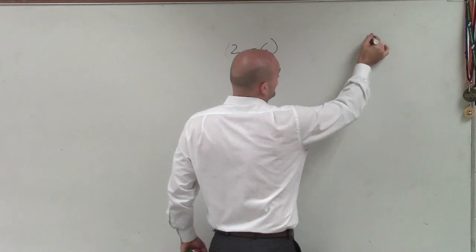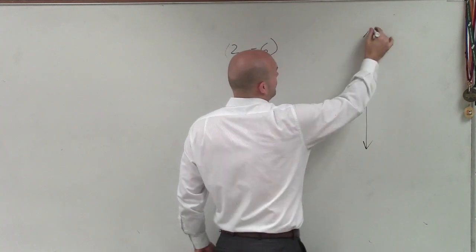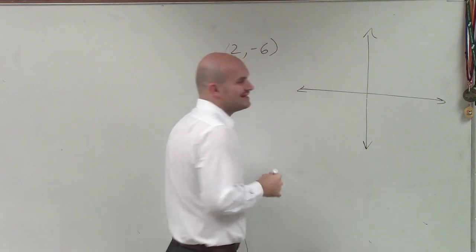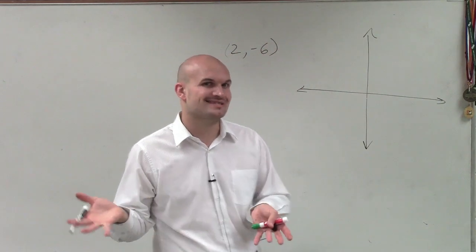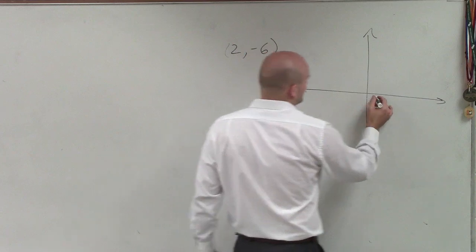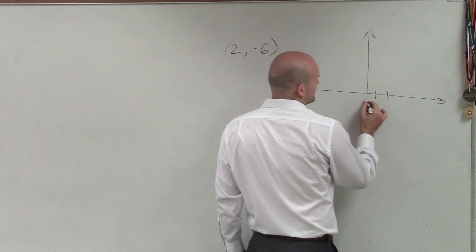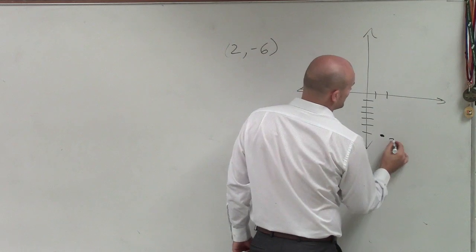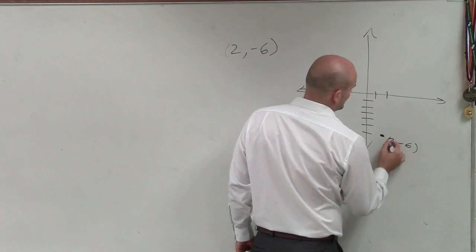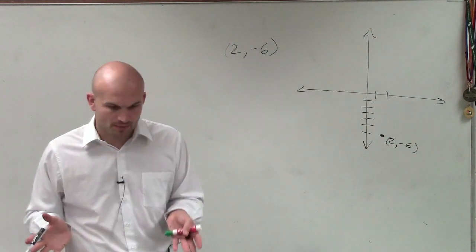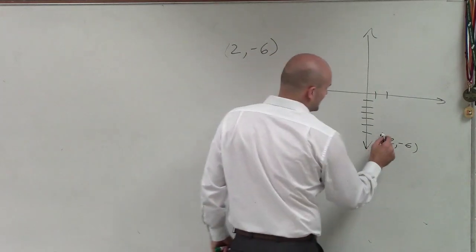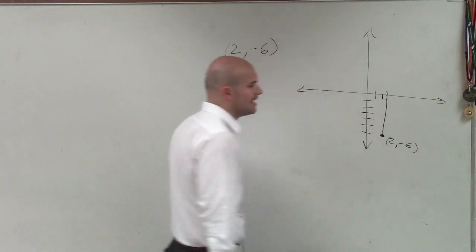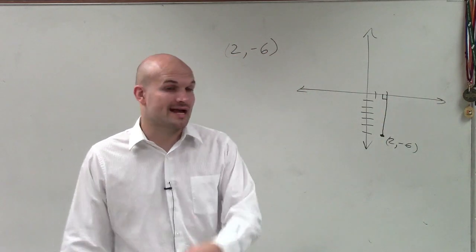Before I create my triangle, I want to take a look at where the point 2 comma negative 6 is, and then how we're going to create a triangle from just one given point. So the point — I'm going to go over 2 and then down negative 6. That's my point 2 comma negative 6. To create a triangle, we're going to take our point and draw a straight line directly to our x-axis. That's going to create a perpendicular line, which gives us our 90-degree angle.